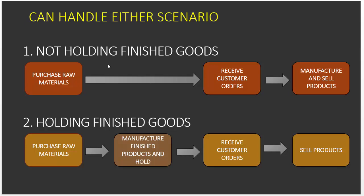But you could also run a juice company where you make smoothies, store them for a few days, and then sell to customers within that period. In that scenario, you're holding finished goods — you purchase raw materials, manufacture them into products, hold them in your freezer or warehouse, and sell when customer orders arrive. The main difference is: scenario one involves purchasing then selling; scenario two involves purchasing, manufacturing, then selling. Both scenarios can be addressed in this template.